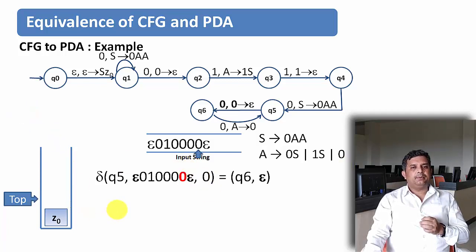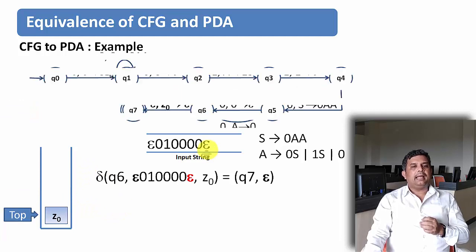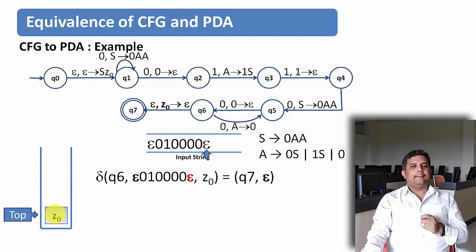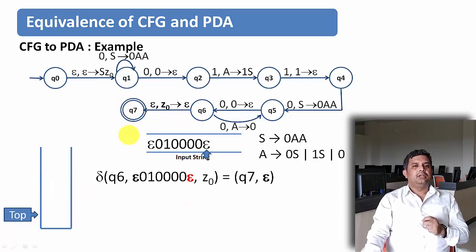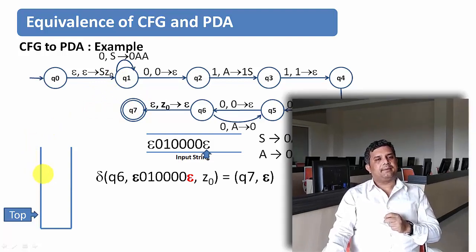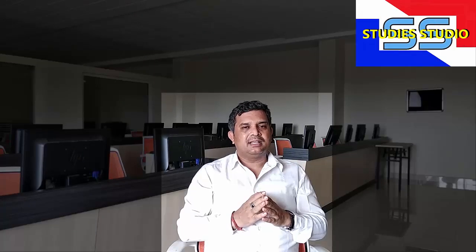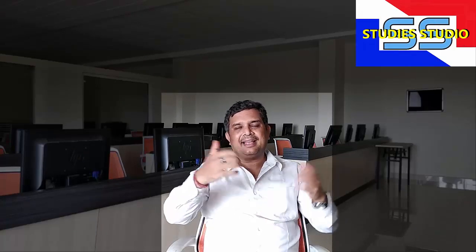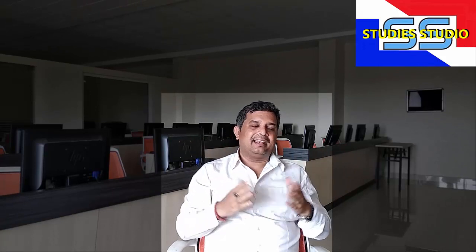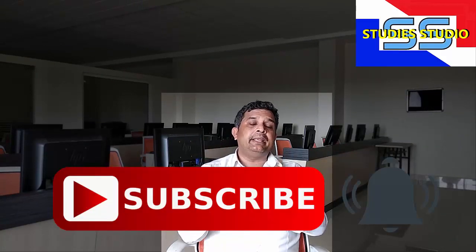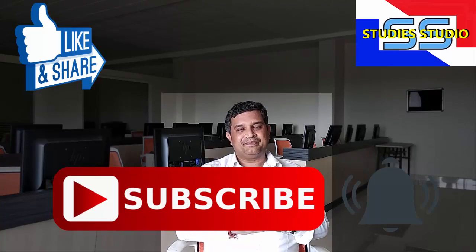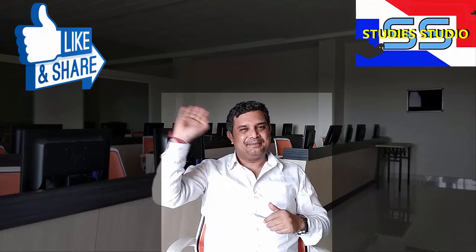Now the input symbol is Epsilon and the top of the stack is Z0. So we pop Z0 from the stack and go to the final state. This is how we generate our PDA from a given context-free grammar. I hope you understood this. If you did, give me a like and share among your friends. In our next video, we are going to talk about how to convert PDA to context-free grammar. See you then. Take care. Bye.